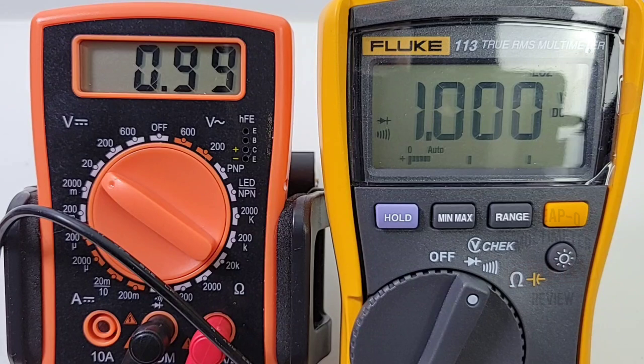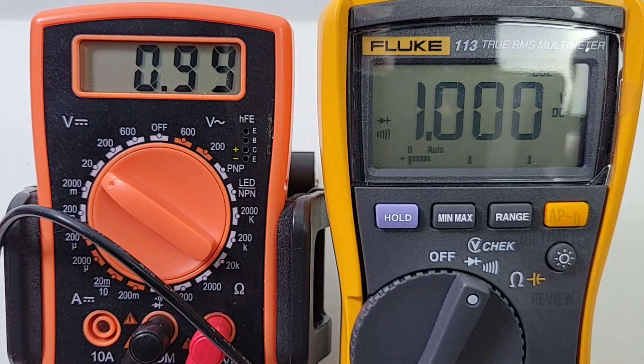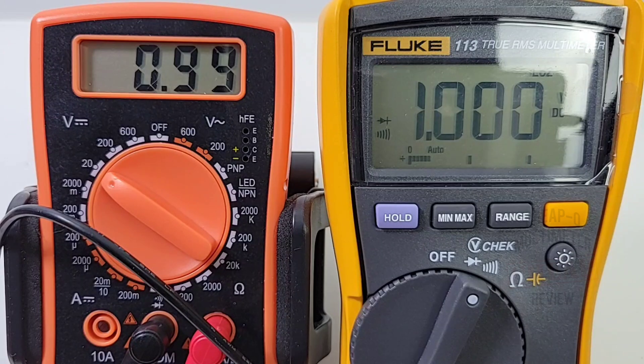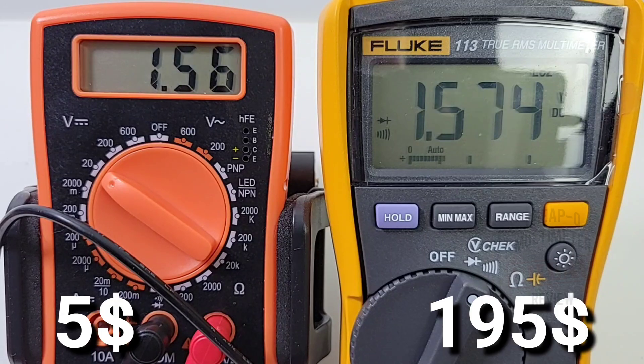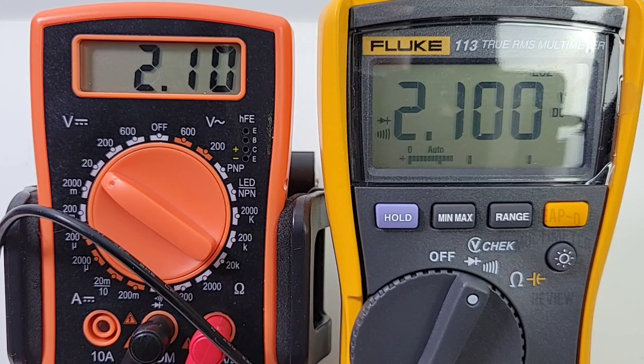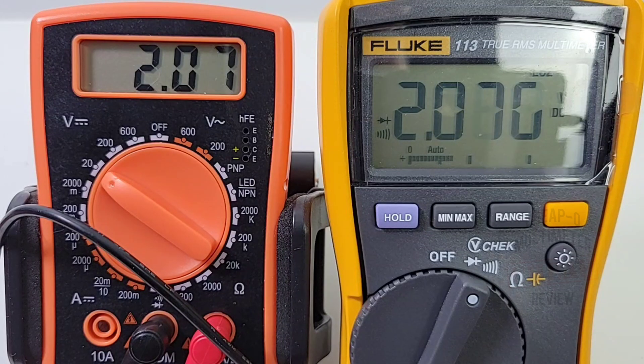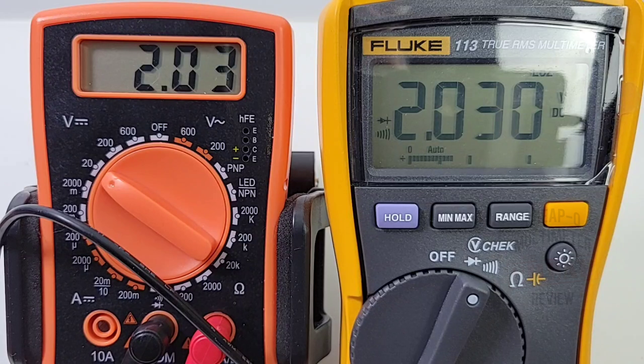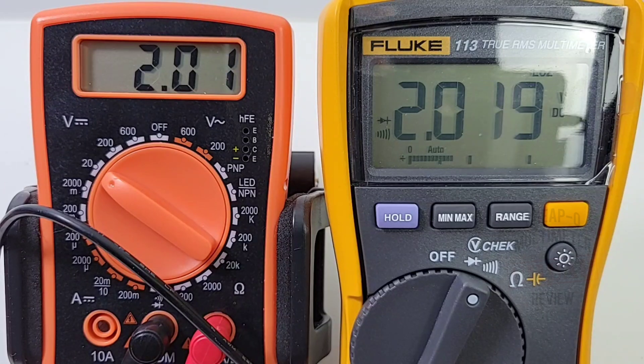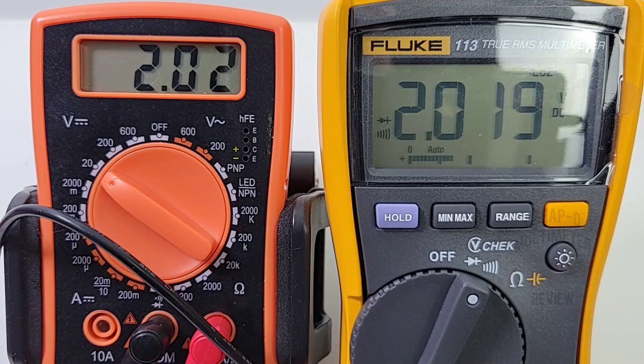By the way, the Fluke costs about 200 bucks Canadian, about 180 US. Five dollars for the Rushoi. Here we go, taking it up to two volts. Two volts even steven, coming up as 2.01 and 2.01. So close, we're going to call that one a draw.